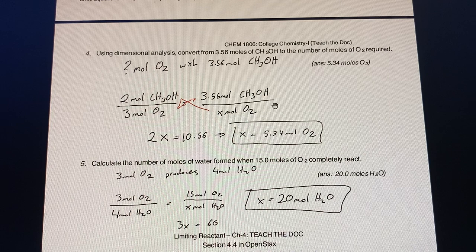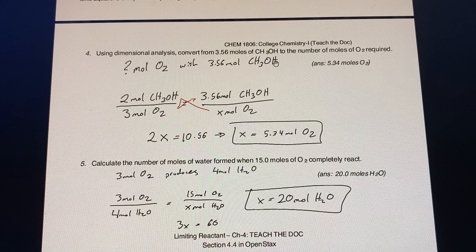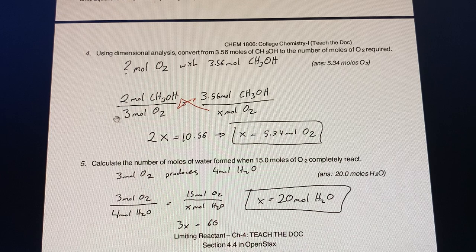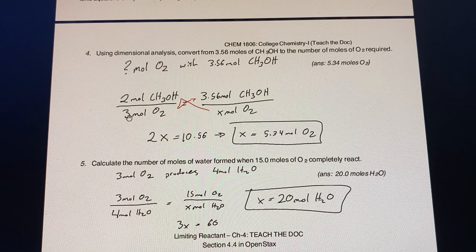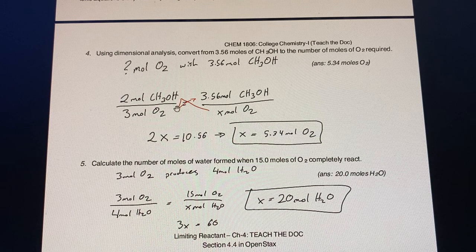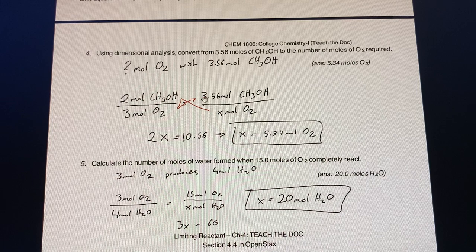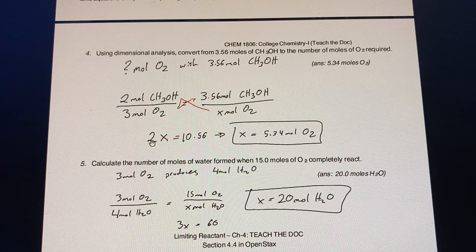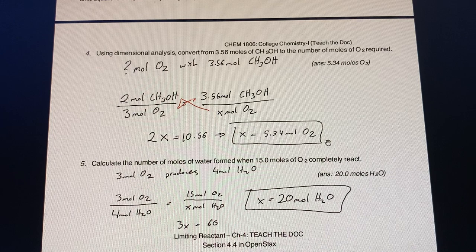Here we're using dimensional analysis to convert, if we had 3.56 moles of CH3OH to the number of moles of O2 required. We put it up into a ratio, and as we have given in the question above, 2 moles of CH3OH is to the 3 moles of O2. So we put that in a ratio where 3.56 moles of CH3OH equals x amount of moles of O2. We cross multiply, so x times 2 and 3 times 3.56, then divide by 2 to get x alone. Therefore we have 5.34 moles of O2.